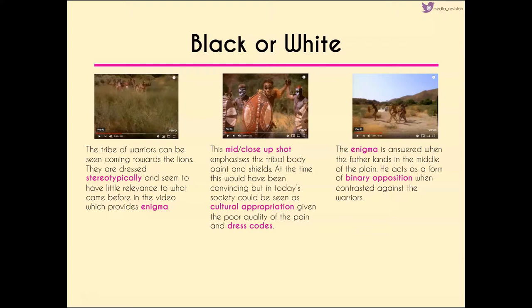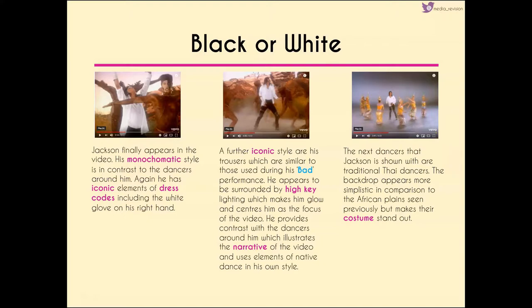The enigma is answered when the father lands in the middle of the plains, acting as binary opposition against the warriors. Jackson finally appears in the video — dressed in monochromatic colors, making him stand out and seem brighter compared to those around him. He has his iconic dress elements including the white glove on his right hand. His trousers are very similar to those used during his Bad performance, and the lighting around him appears high key, making him glow and drawing our eyes to him.